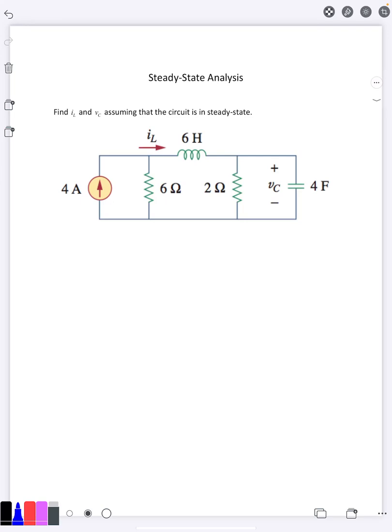So in a circuit like this, steady state is going to happen once your inductor and capacitors are fully charged. Now it's asking us to find the current through the inductor and the voltage across the capacitor at steady state.